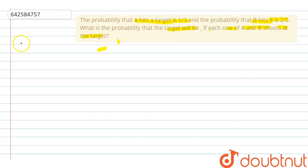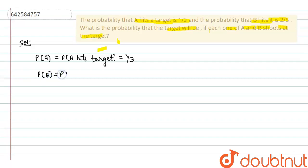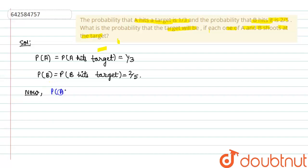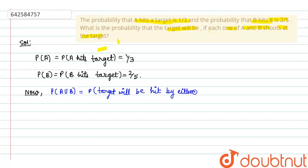Solution. Firstly, according to the question, probability of A — that is, probability that A hits the target — is 1/3, and probability of B — that is, probability that B hits the target — is 2/5. Now, as we know, the formula is: probability of A union B equals the probability that the target will be hit by either A or B.